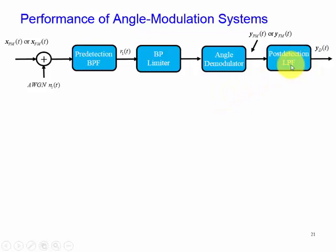The post-detection coming out of the low-pass filter is where our message signal is going to be used to deliver the information. If it's an audio signal, it's going to be delivered to a speaker, for example.